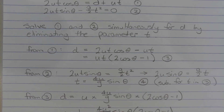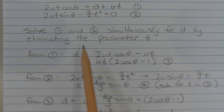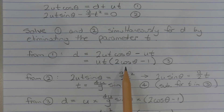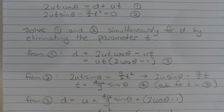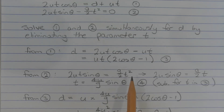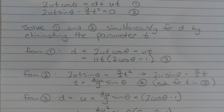The next step is to solve equations 1 and 2 simultaneously for d by eliminating the parameter t. From equation 1, we get d equals 2ut cos(theta) minus ut. Factorizing out ut, we get d equals ut times (2 cos(theta) minus 1). We'll call that equation 3. From equation 2, we have 2ut sin(theta) equals g/2 times t squared. Dividing both sides by t, since t must be greater than 0, we get 2u sin(theta) equals g/2 times t. Making t the subject, we get t equals 4u/g times sin(theta). We'll call that equation 4.